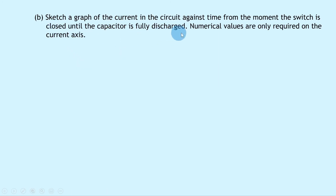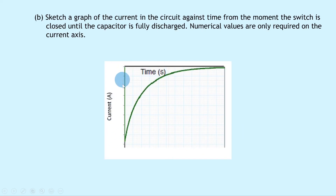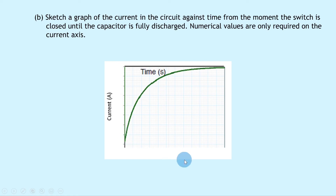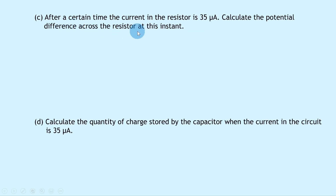Part B: sketch a graph of current against time from the moment the switch is closed until the capacitor is fully discharged. Numerical values are only required on the current axis. The graph for a discharging capacitor shows current on the y-axis against time on the x-axis, in the negative quadrant — a negative current increasing from a maximum negative value up to zero. The maximum negative current is minus 100 microamps, or minus 100×10⁻⁶ amps.